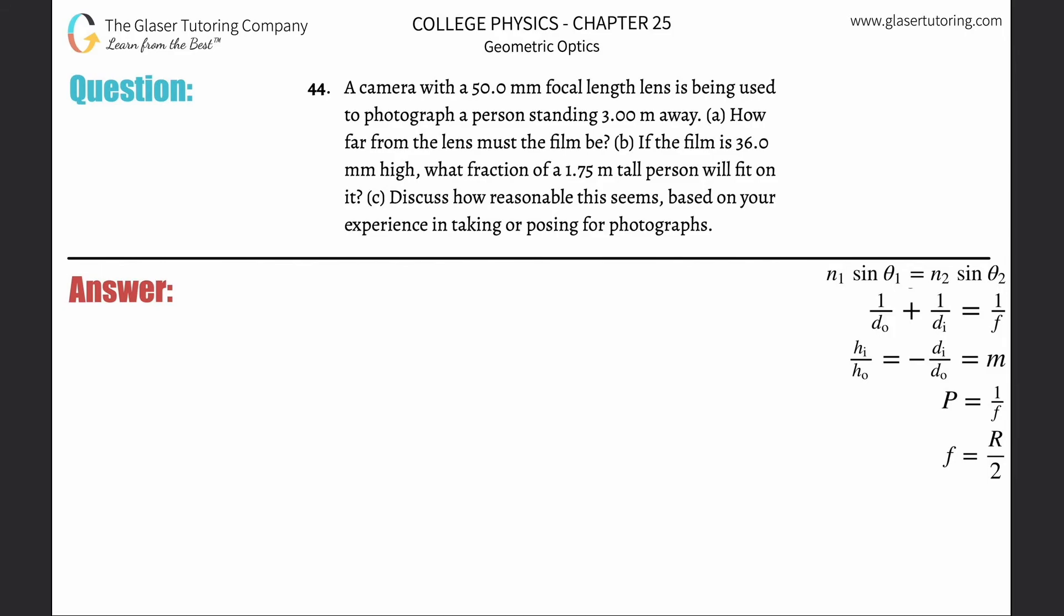Number 44: A camera with a 50 millimeter focal length lens is being used to photograph a person standing three meters away. Letter a: How far from the lens must the film be? Alright, so what you want to do is draw a little picture. So let's say here you have your lens, and an inherent property of that lens is the focal length of it.